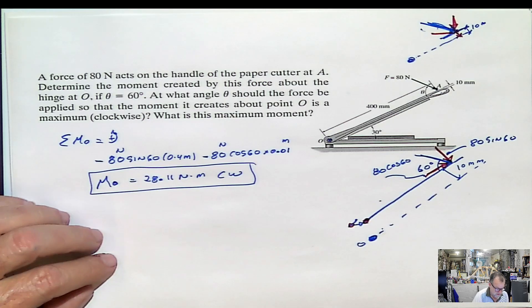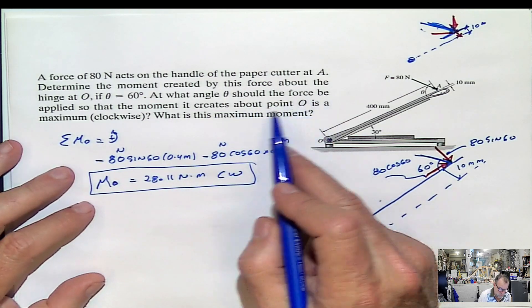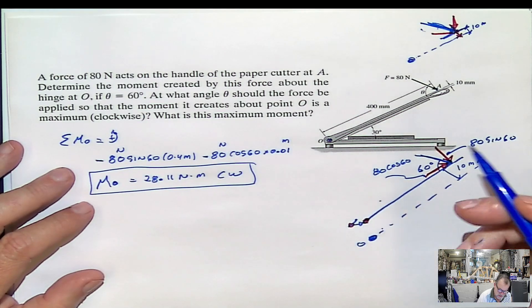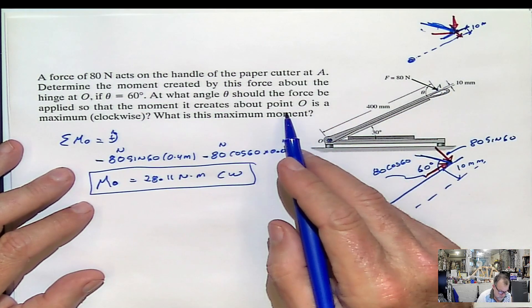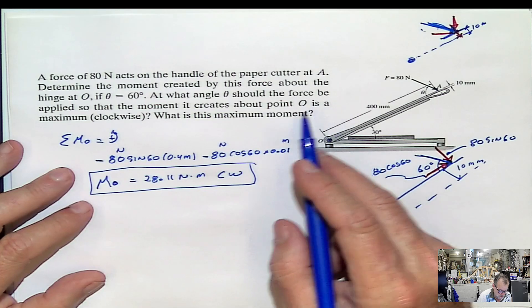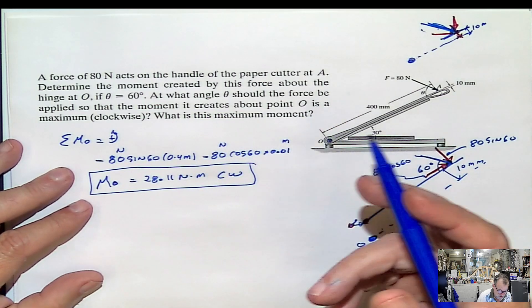Now, for the second one, it says at what angle should the force be applied? That's the part that I was referring to, that it has to be close to 90 degrees. So the result is the maximum. And what is the maximum moment?